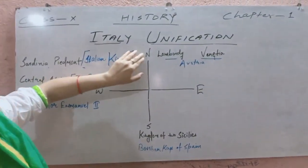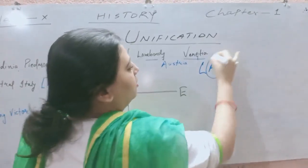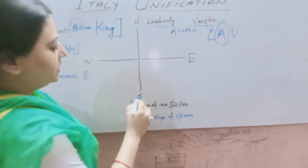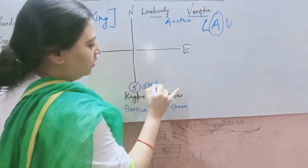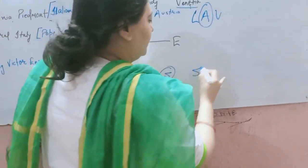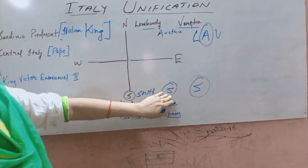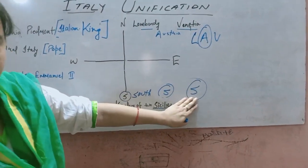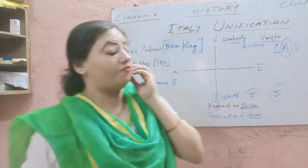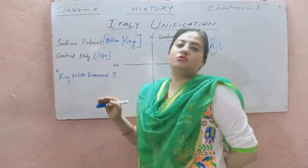Here is a trick to remember: for the northern part, remember L-A — Lombardy and Venetia was under the rule of Austria. For the south, remember S-S-S: S for South, S for Sicily, and S for Spain. The southern part of Italy, the Kingdom of Two Sicilies, was under the control of Spain. Sardinia-Piedmont was under the control of Italian king Victor Emmanuel II, and the central part was ruled by the Pope.